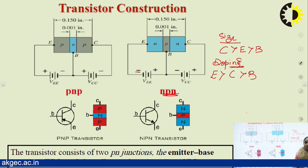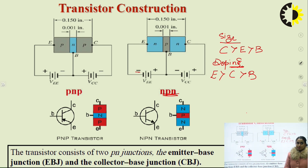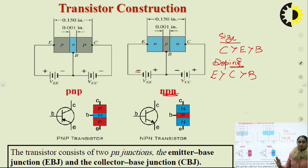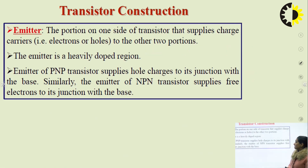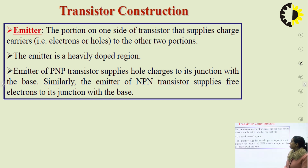The base is the most lightly doped material and the thinnest region. The transistor consists of two PN junctions: the emitter-base junction and the collector-base junction. The emitter is the portion on one side of the transistor that supplies charge carriers — either electrons or holes — to the other two portions. The emitter is a heavily doped region.